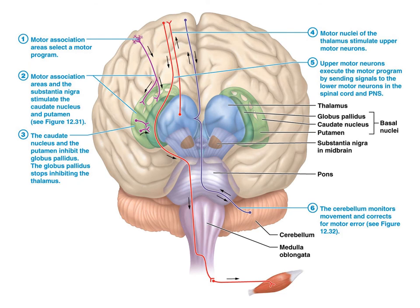Here's a more elaborate pathway of the descending pathways where the motor association areas select a motor program. These enter areas of the substantia nigra and the caudate nucleus, which we briefly mentioned before. These then enter the thalamus, down the brainstem, into the spinal cord to the musculature. The cerebellum monitors movement and corrects for motor error, as shown in the previous figure. This is an example of the complexities involved in motor learning.